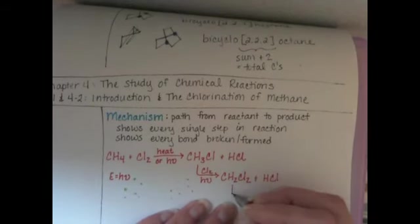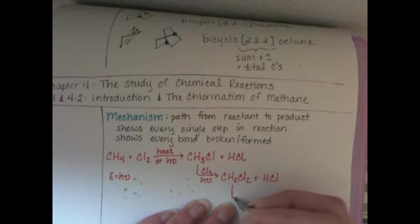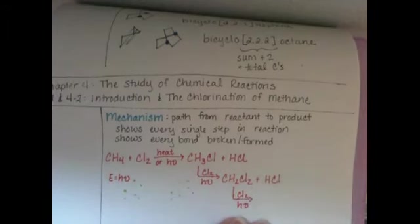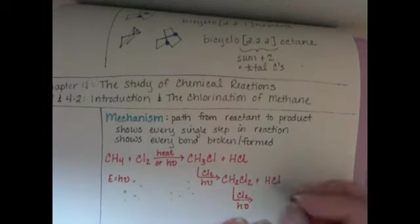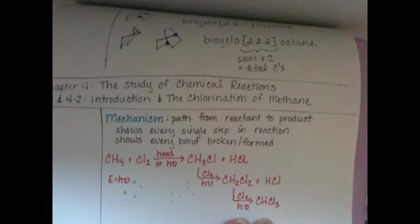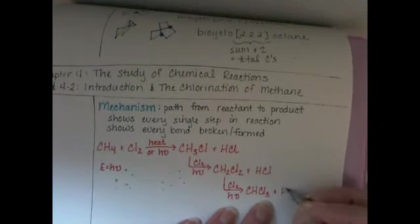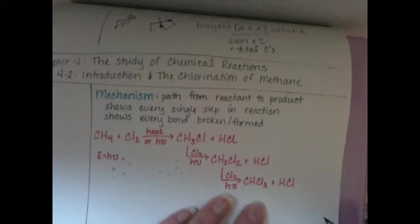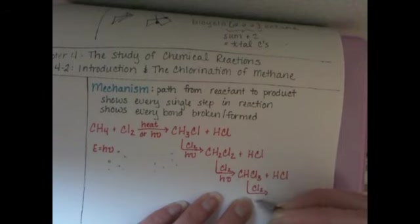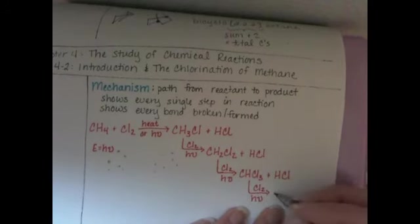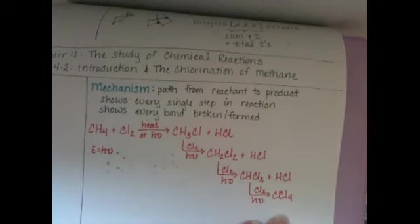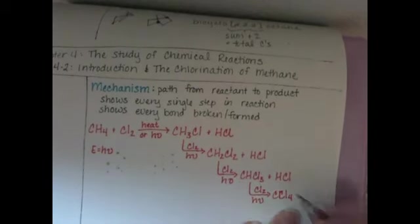The dichloromethane could also react with chlorine gas and heat or light to give us CHCl3, trichloromethane with HCl. And the trichloromethane could react with chlorine gas and heat or light to give us CCl4, plus HCl.